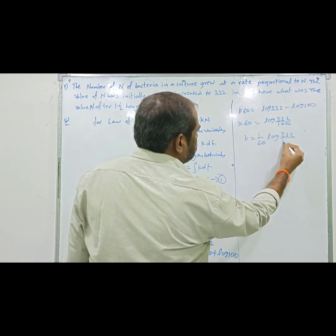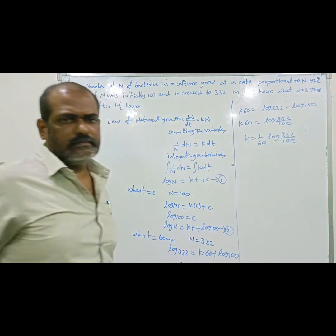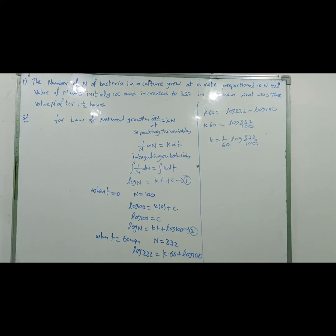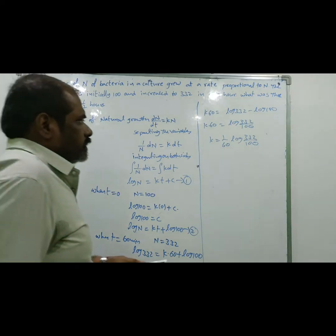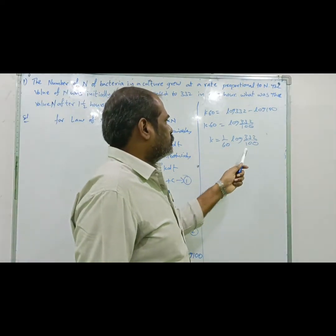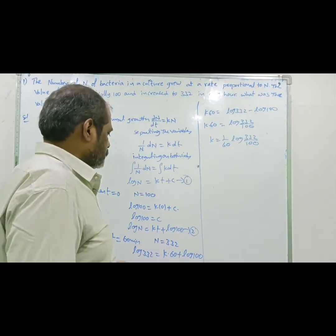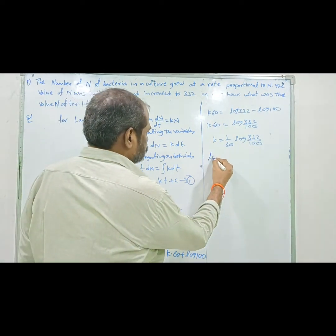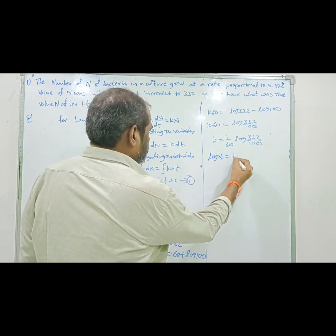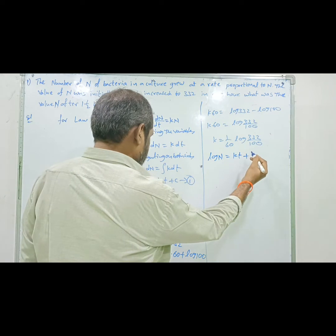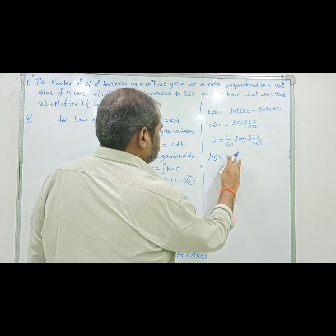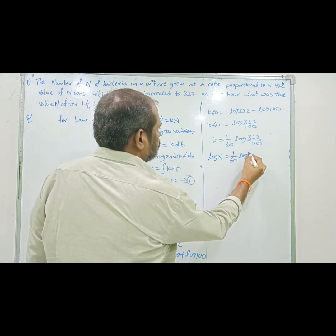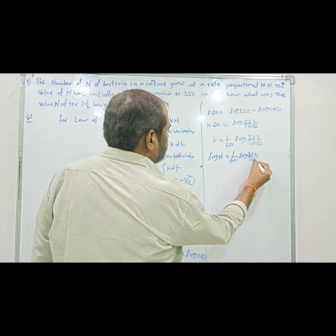Therefore k = (1/60) × log(332/100). Substituting k back into equation 2: log n = (1/60) × log(332/100) × t + log 100. To find n after 90 minutes, substitute t = 90.